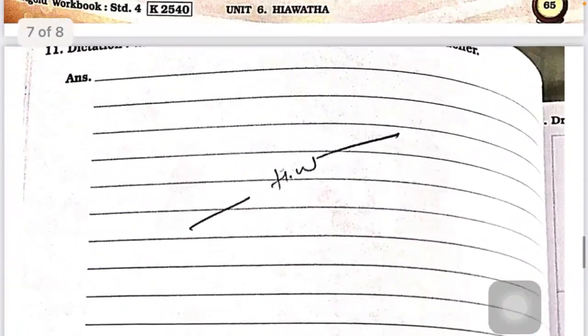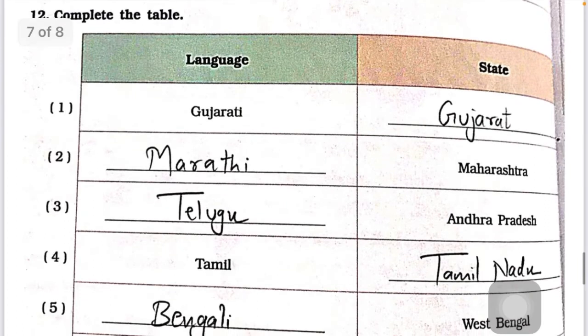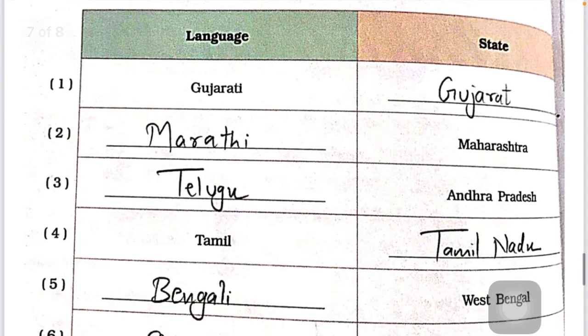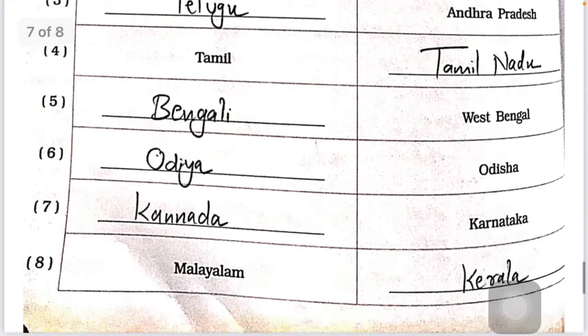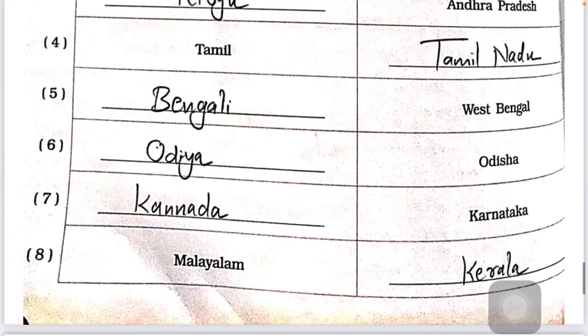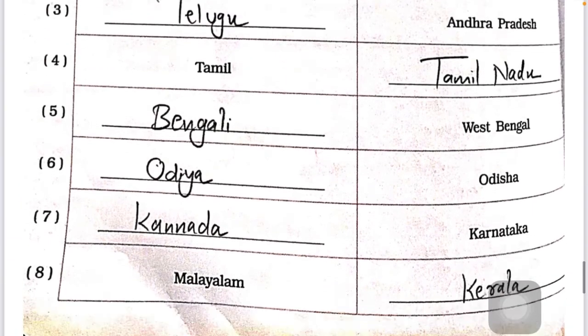Now the next part — complete the table of Indian states and languages. Gujarat — Gujarati. Marathi is spoken in Maharashtra. Telugu is spoken in Andhra Pradesh. Tamil is spoken in Tamil Nadu. Bengali is spoken in West Bengal. Odisha — Odia. Karnataka — Kannada. Malayalam is spoken in Kerala.